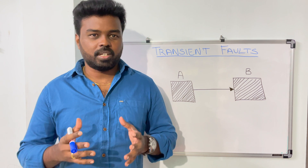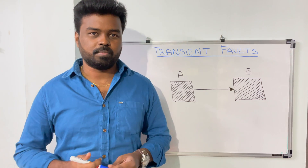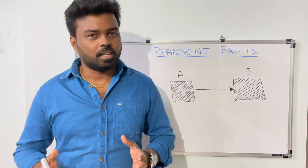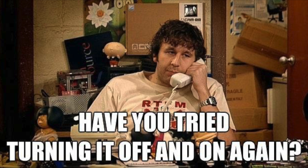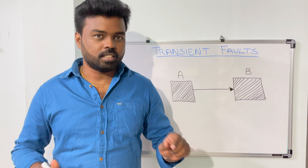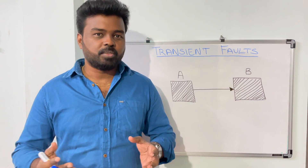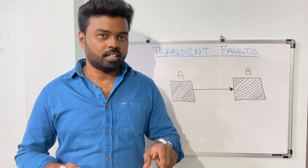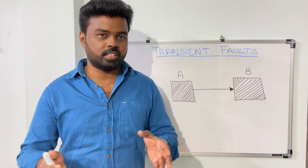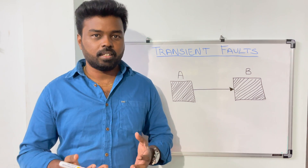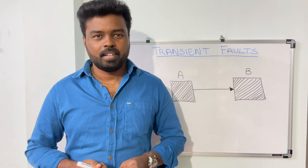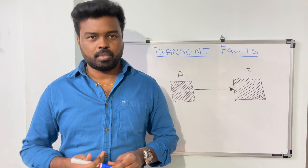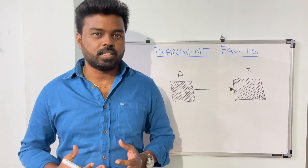Transient faults are temporary issues that could occur in any distributed system, and most of the time these issues are self-correcting. For example, sometimes you might face some abnormal behavior in your computer and if you just restart it, it might work. Or sometimes you might try to send a text message, it might fail, but if you do a retry the message might succeed — nobody is fixing the issue for you, just doing a retry makes it successful.